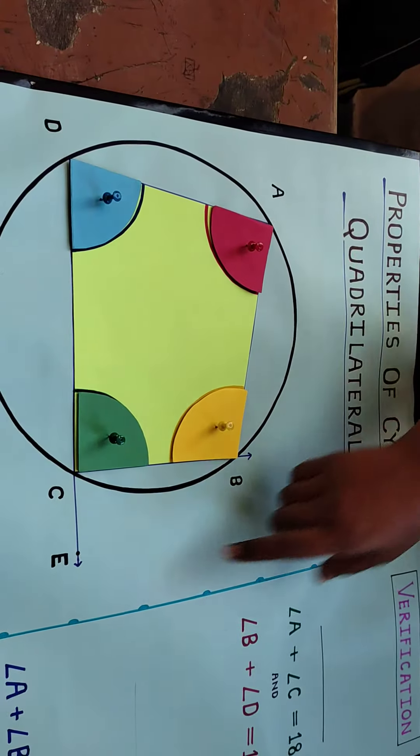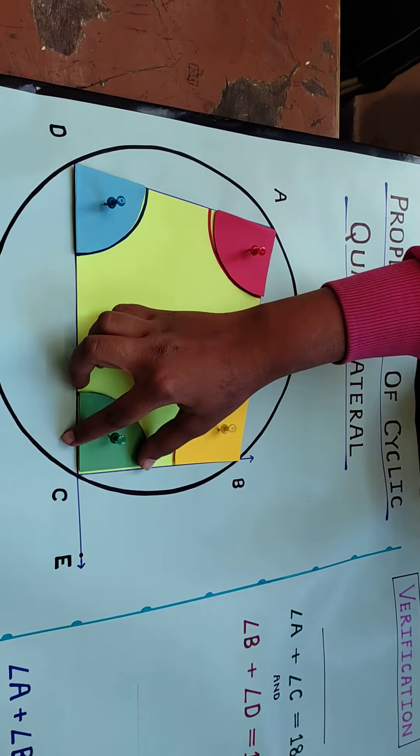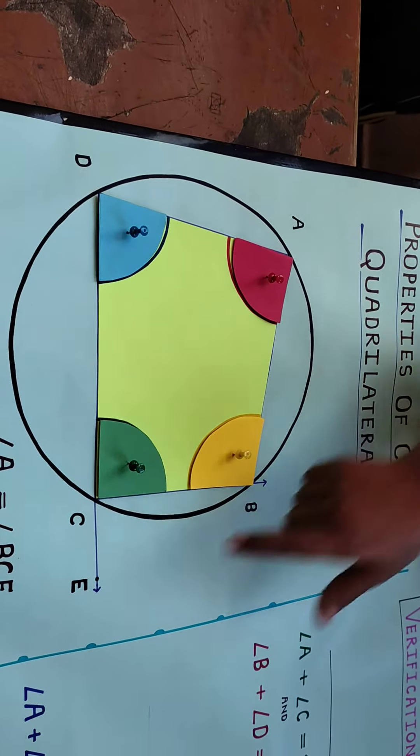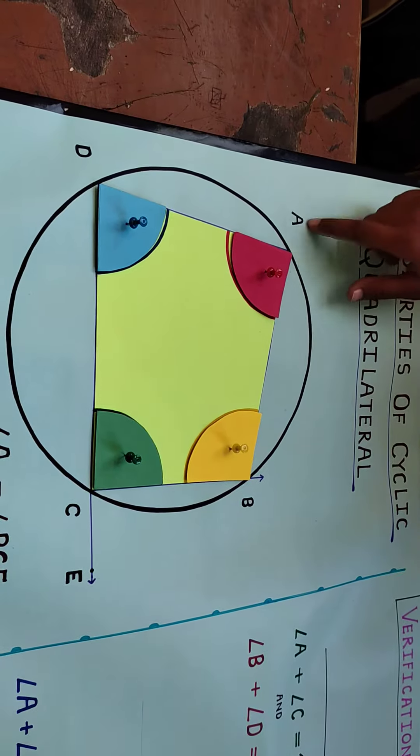The third property tells us that if we extend the exterior angle of angle C, angle BCE, it will be equal to the interior opposite angle, which is angle A.